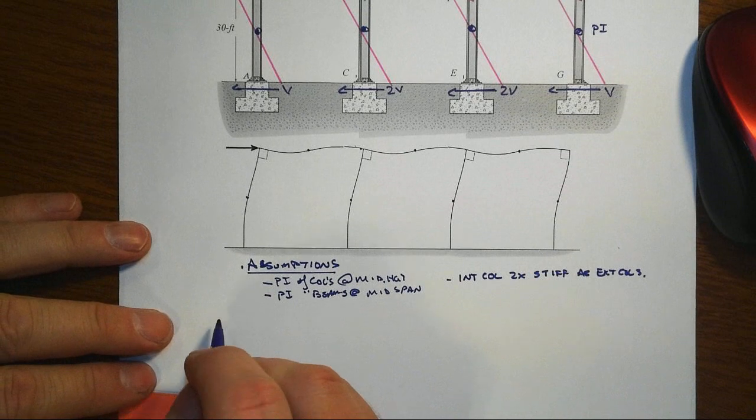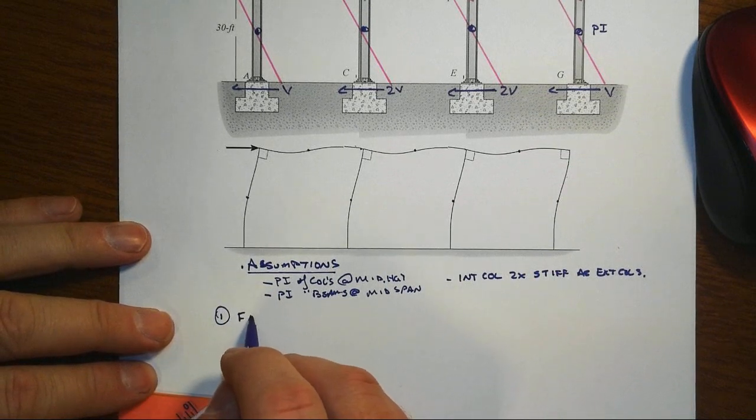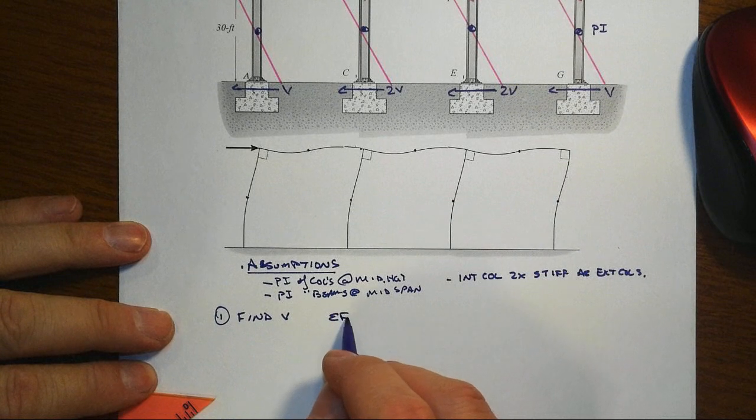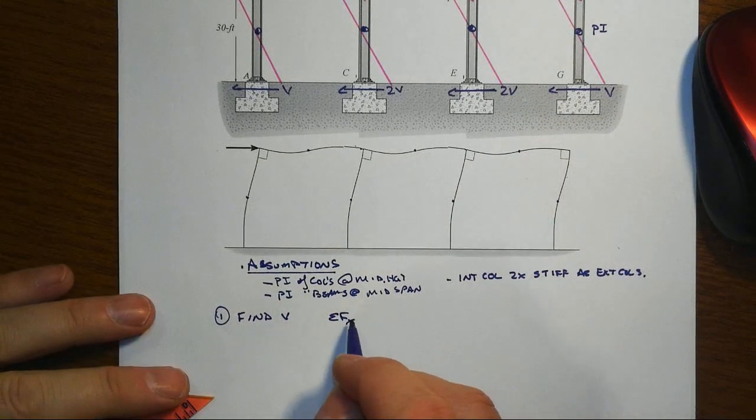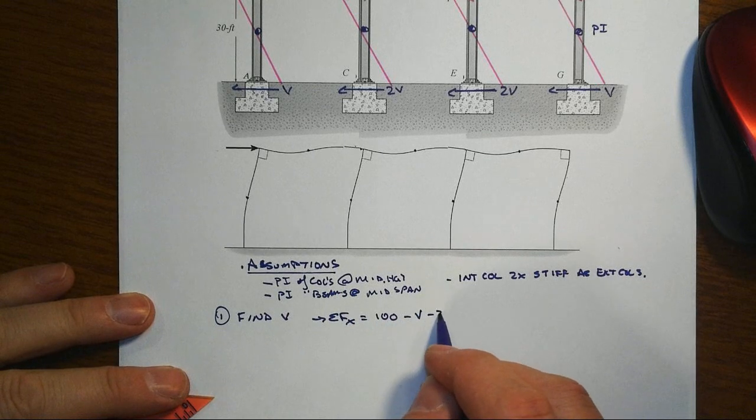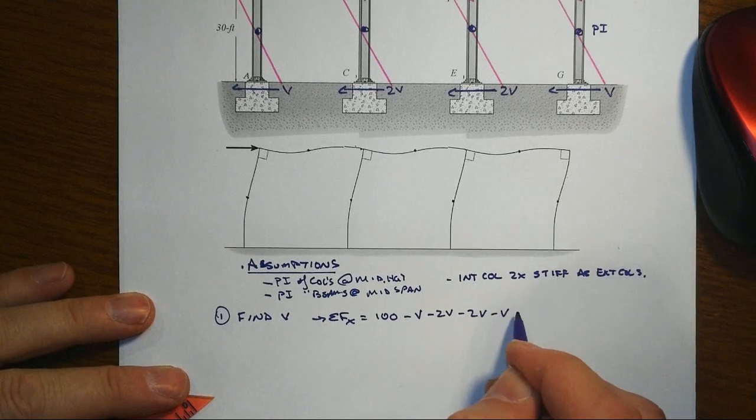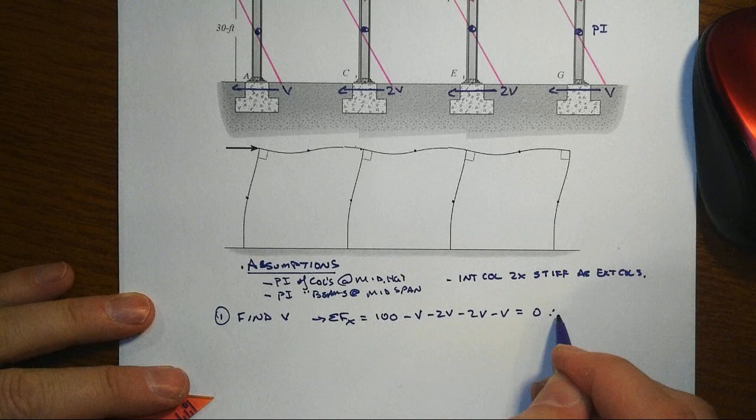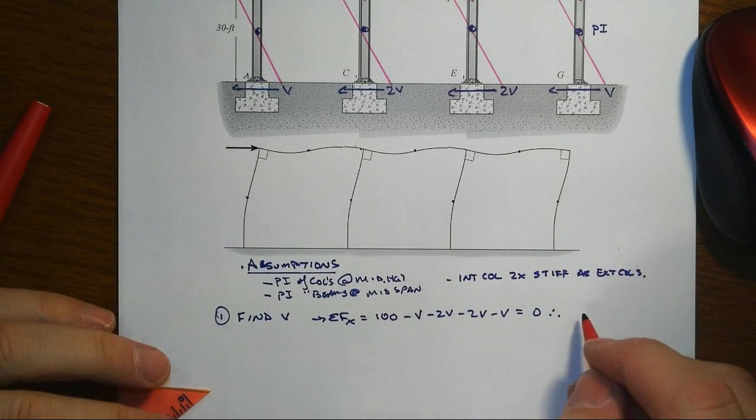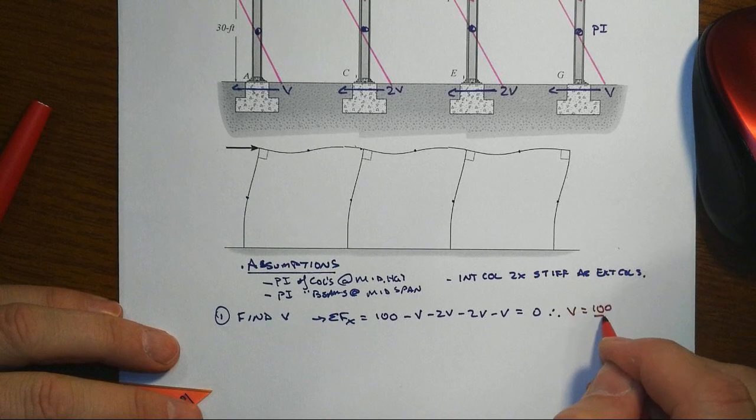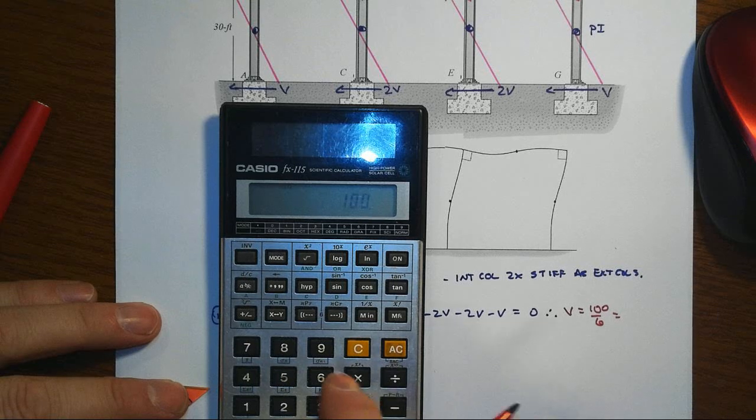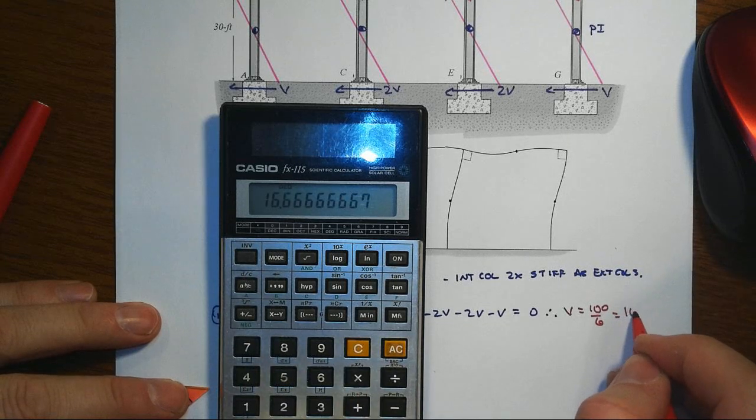100 kip applied load, then the first step is let's find our columns here in the exterior, and sum of forces in the X would mean that we would have 100 minus V minus 2V minus 2V minus V equals 0. So therefore, that in our approximation here would say that V is equal to 100 divided by 6, and I believe that's probably 16.67, isn't it? Indeed it is.